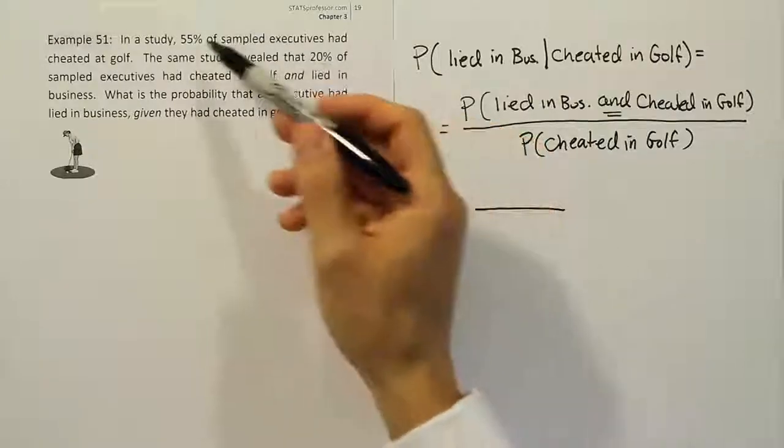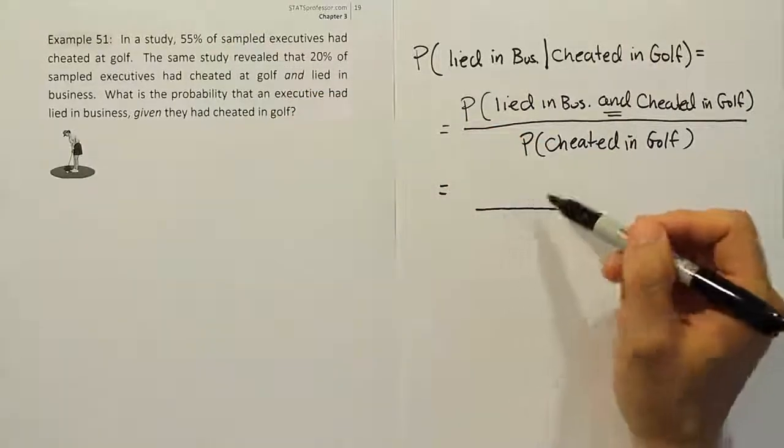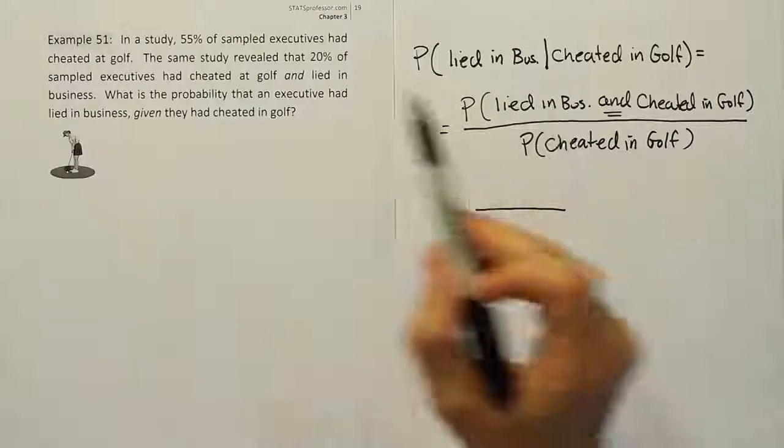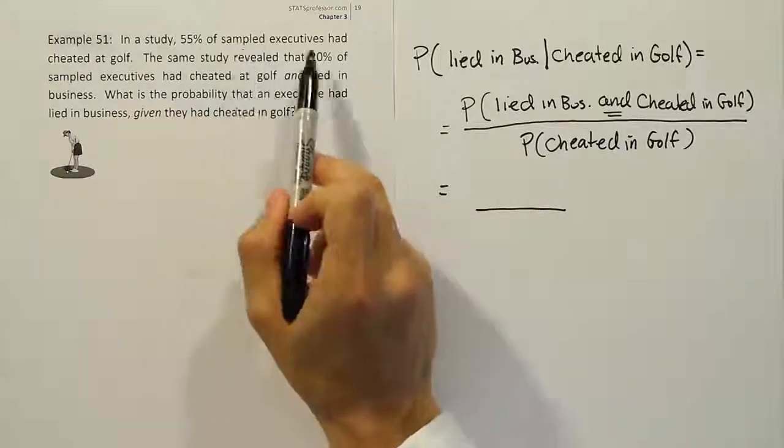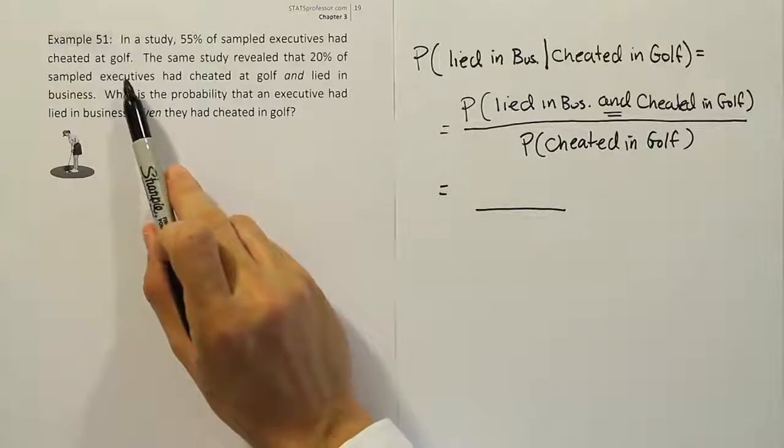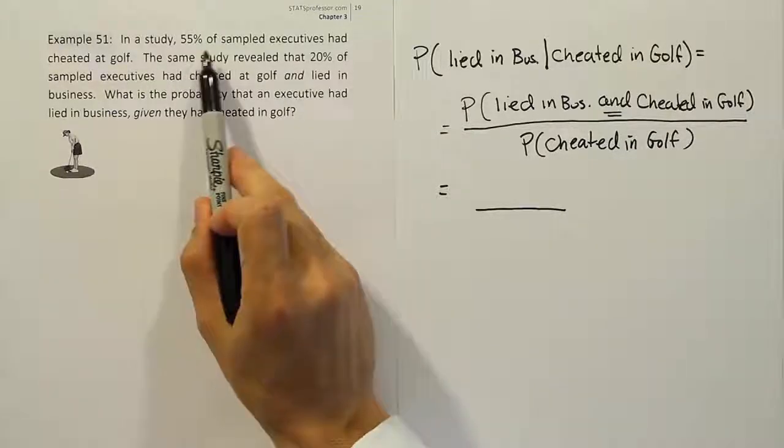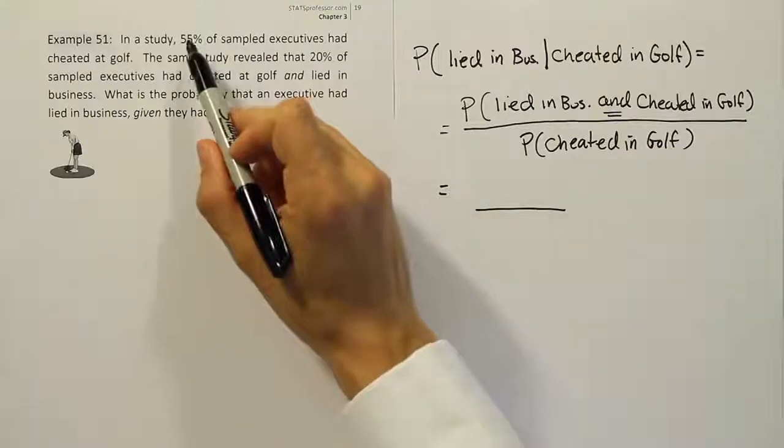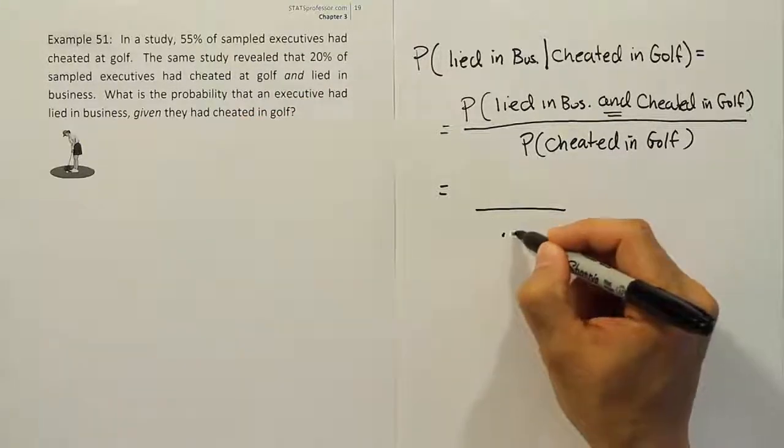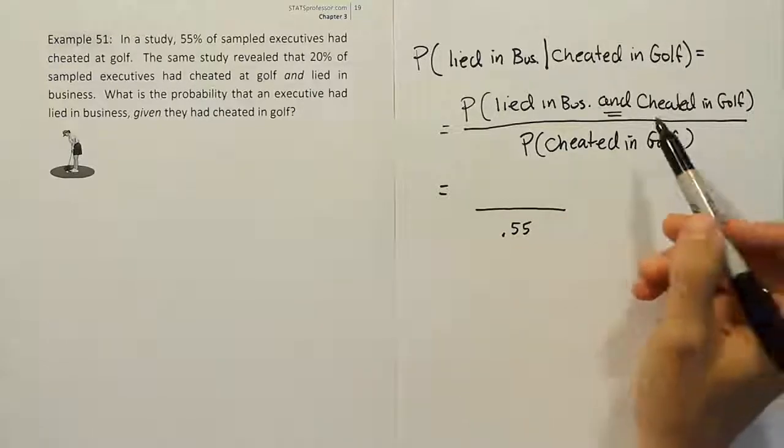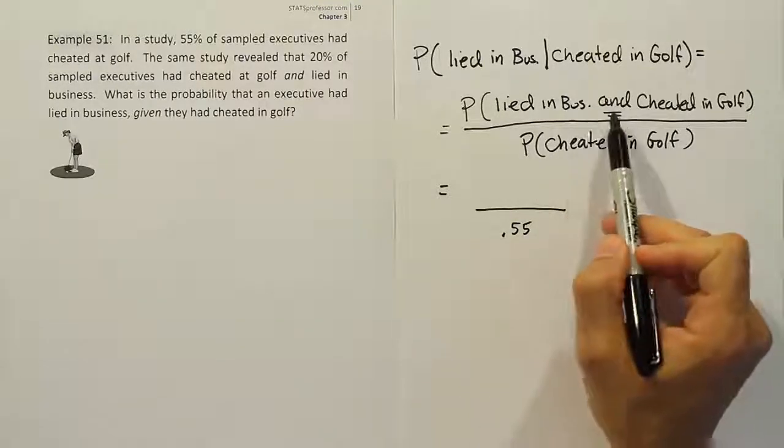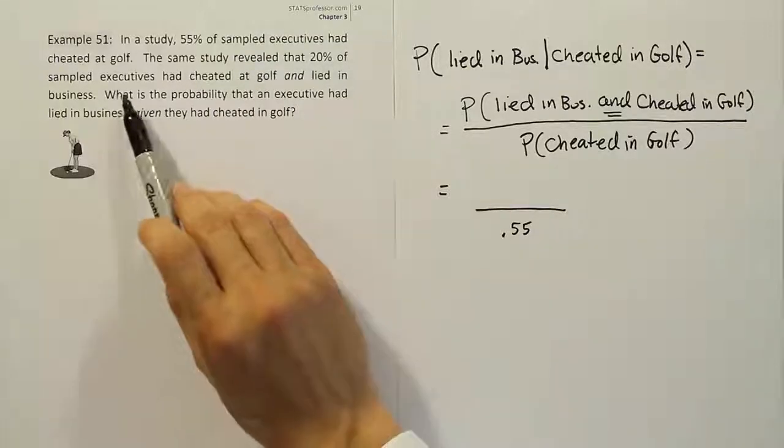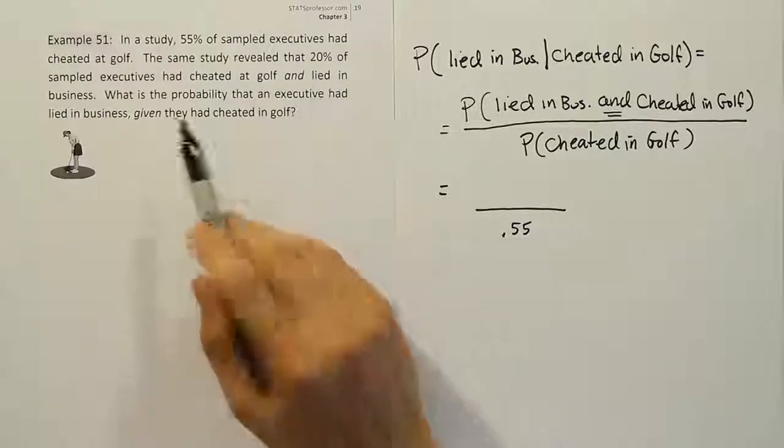Now once you've done that, the hard part is actually done. Because in this problem, when they don't have a table of data, they usually just give you these two probabilities. We just have to put them in a fraction and finish. You could kind of guess, since there's only two probabilities, it's going to be 20% over 55% since obviously the top has to be smaller than the bottom. But let's confirm. It says 55% of sampled executives had cheated at golf. So cheated in golf, the probability of that according to this is 55%, so 0.55.